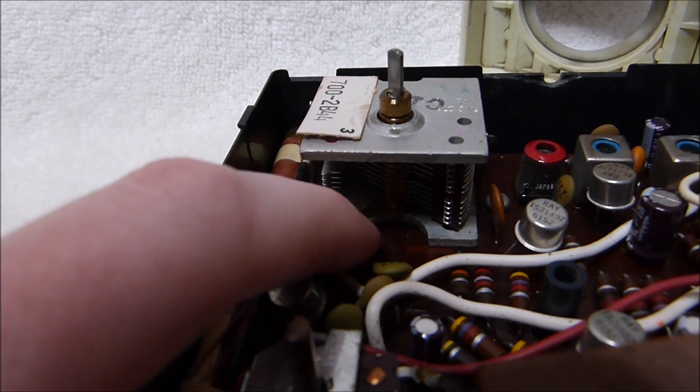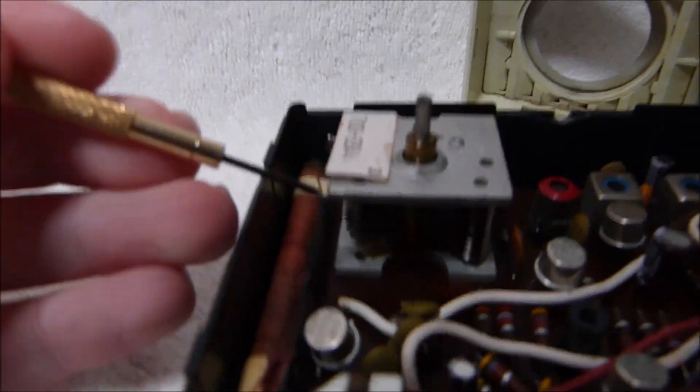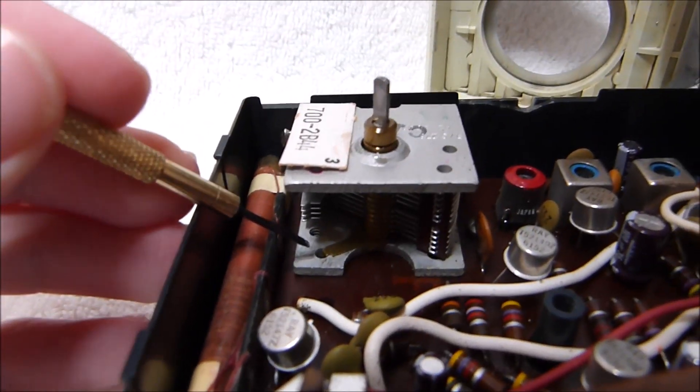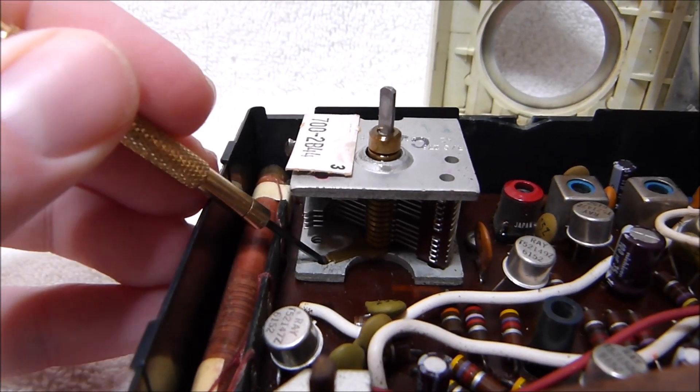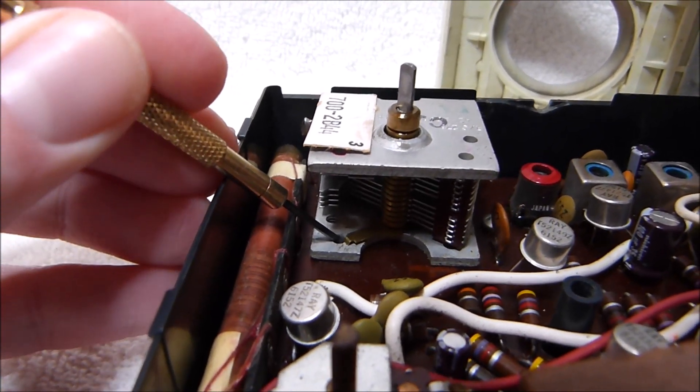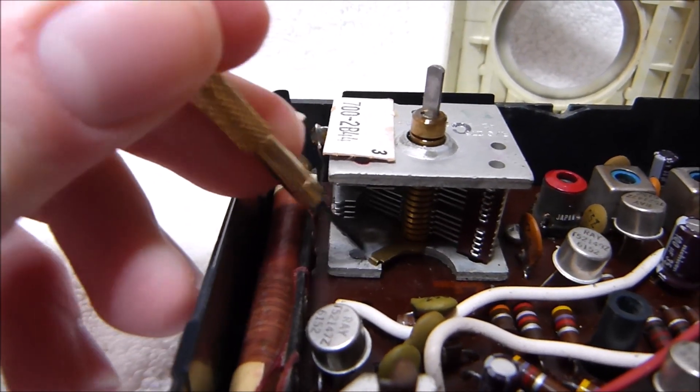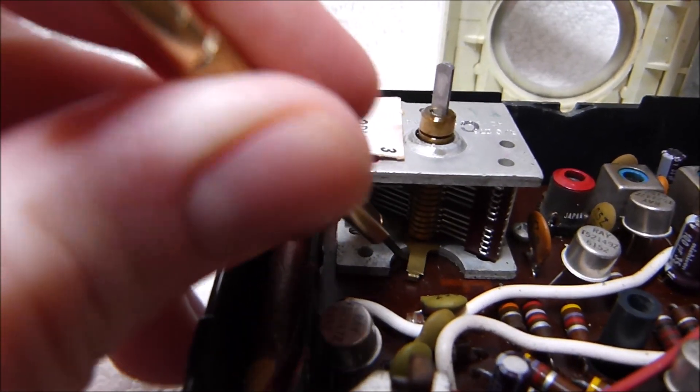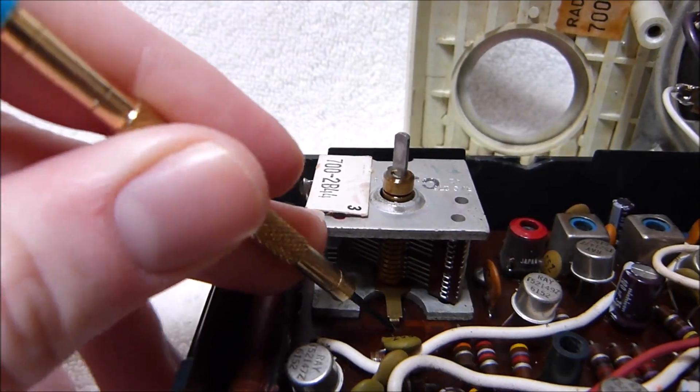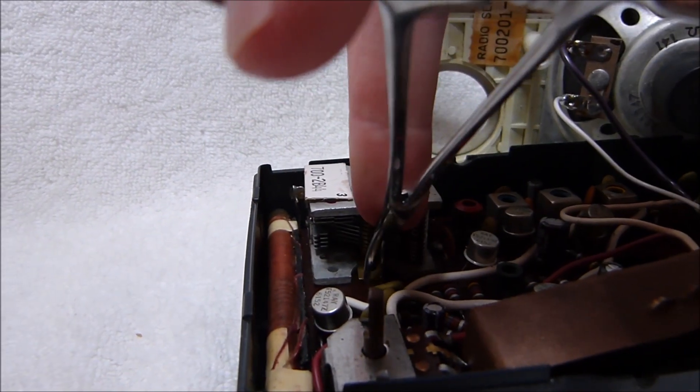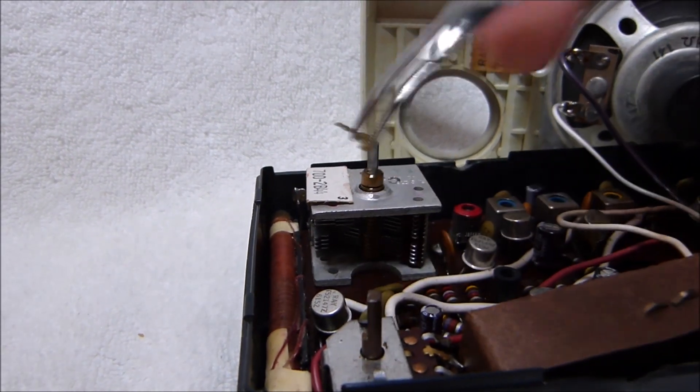First, you need to remove this little brass clip, I'll show you how to do that. So get a small flathead screwdriver, like this one, and then pry up on the end of the clip and slide it over, just like that. Slide it over into this open space, and just pull it forward like that, and it comes out.